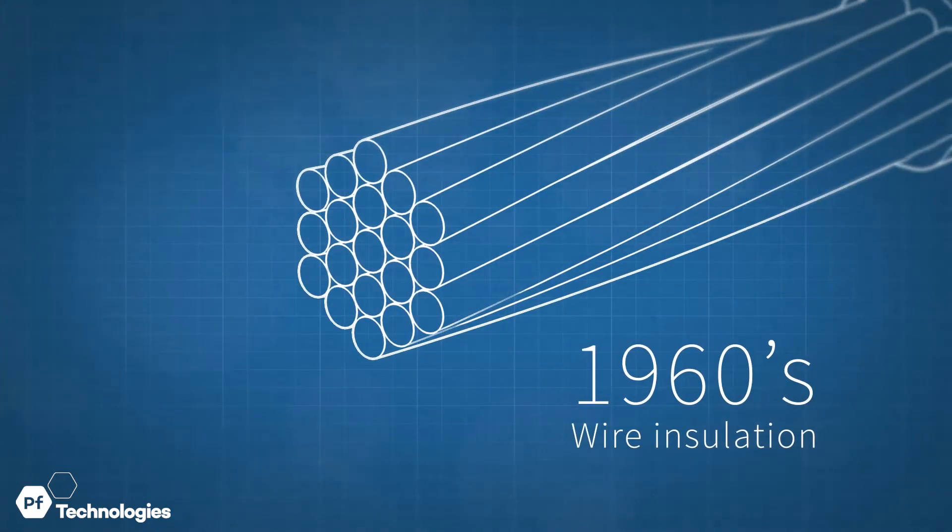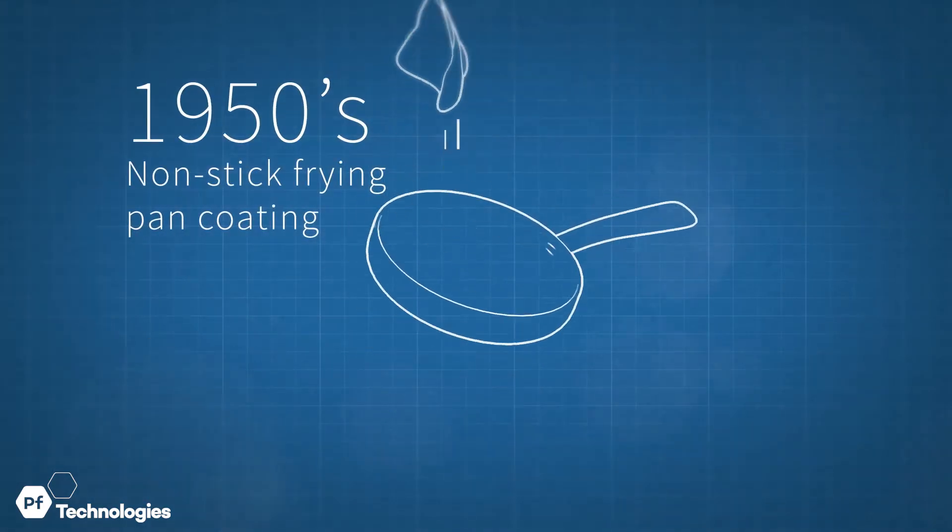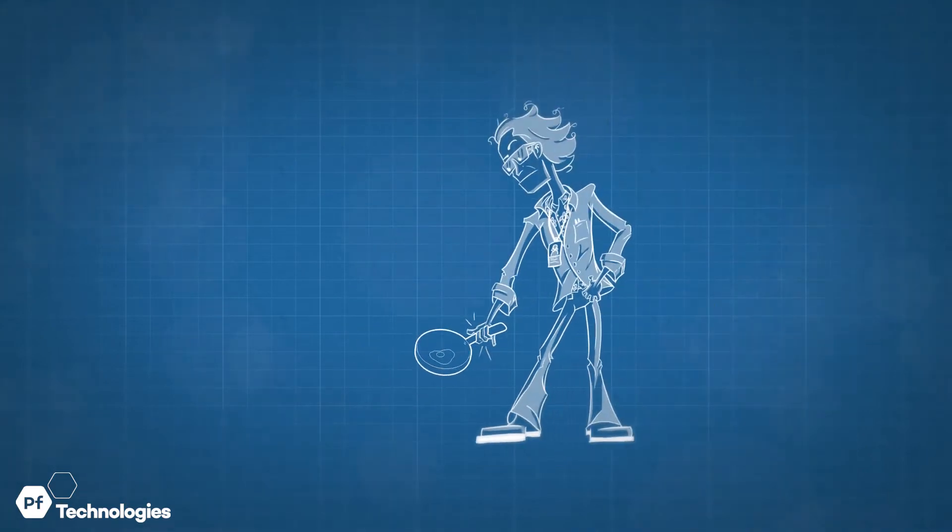As wire insulation and even as coating to create non-stick frying pans, we saw far greater possibilities.